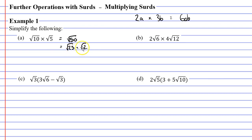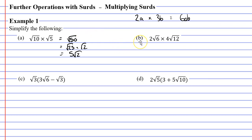25 times 2 is 50. Now 25 is a perfect square, so the square root of 25 gives me a whole number of 5. I then multiply this by the square root of 2, so I simply write root 2 next to it. Let's now move on to question b.